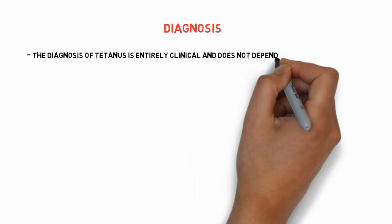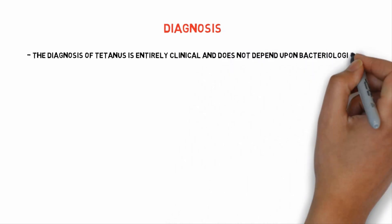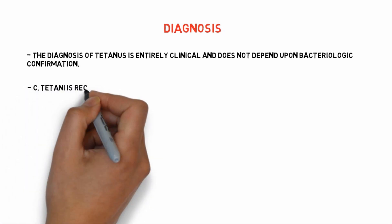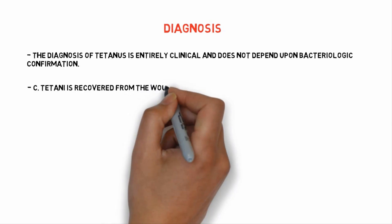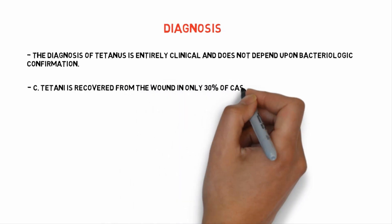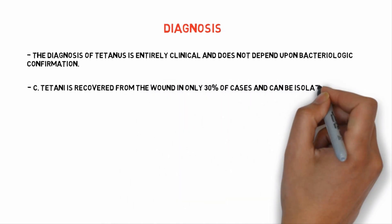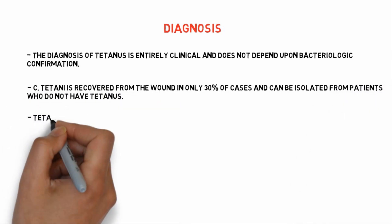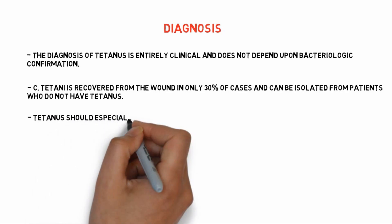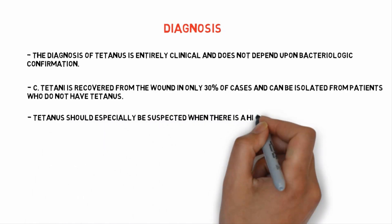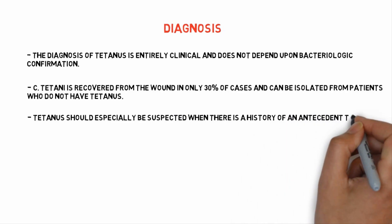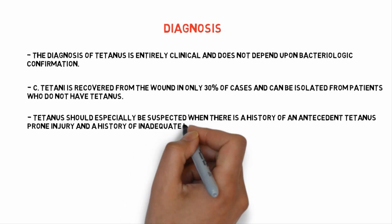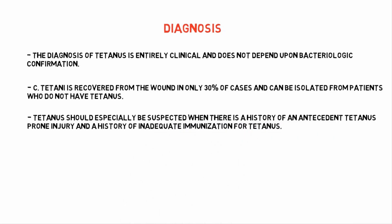The diagnosis of tetanus is entirely clinical and does not depend upon any bacteriologic confirmation. Clostridium tetani is recovered from the wound in only 30% of cases and can be isolated from patients who do not have tetanus. Tetanus should especially be suspected when there is a history of a tetanus-prone injury and a history of inadequate immunization for tetanus.